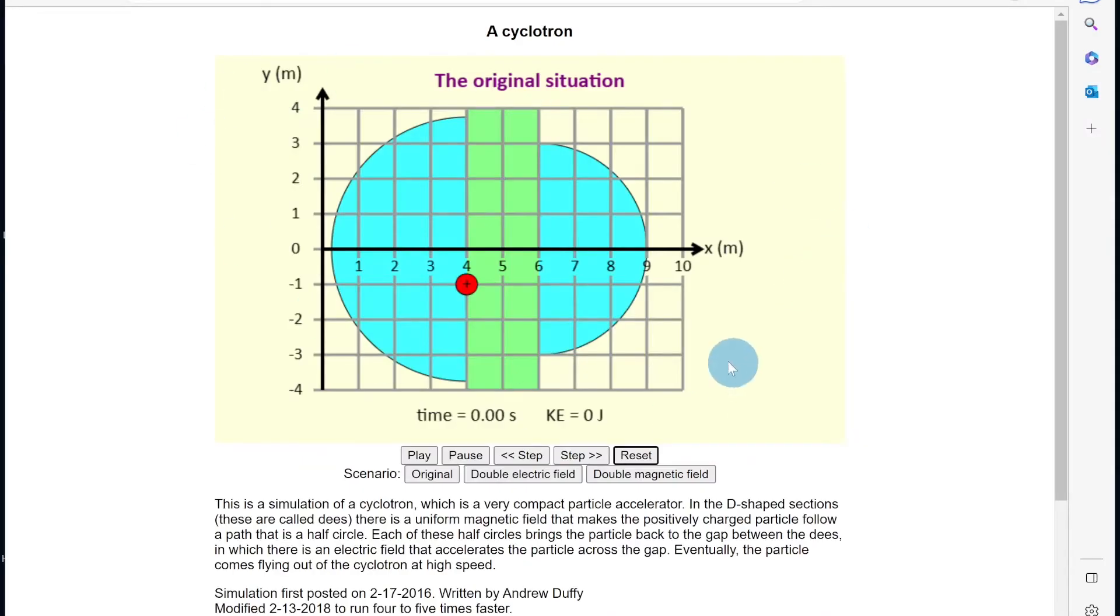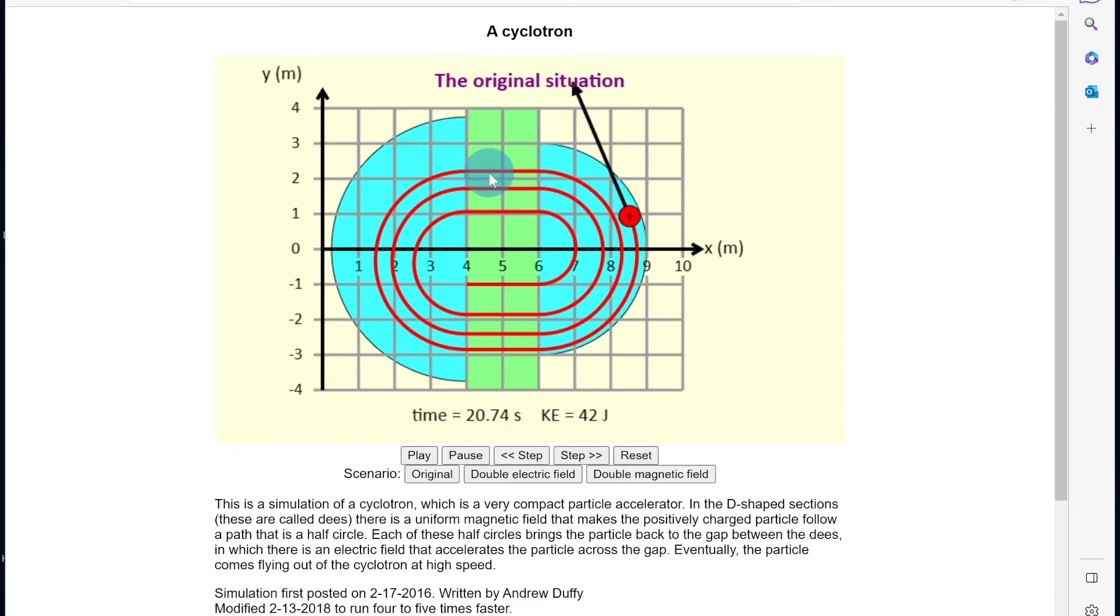Here we have a simulation which can help you visualize what the particles are doing when they're traveling within the dees and between the dees. So if we click play here you'll see the particle travel straight when it's between the dees and then it curves or changes direction when it's within the dees. That's due to the magnetic field in the dees. You'll also notice the particle speeds up when it's between the dees.